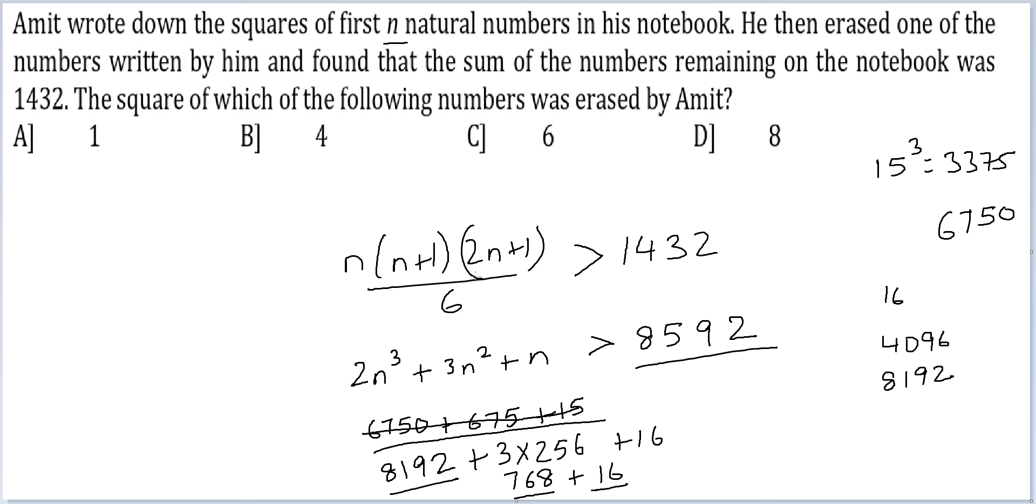So the original number that we were seeking was up to 16 only. So we are looking at 16 into 17 into 33 divided by 6. I get 8 into 17 is 136 into 11, which multiplies to give me 1496. This is the sum that I should have got. But I am getting 1432. The difference between these two is 64. 64 is the square of 8. Therefore your answer should be option D, 8.